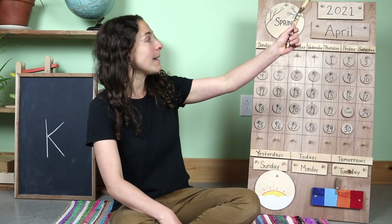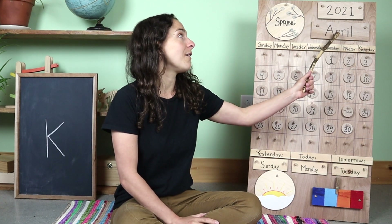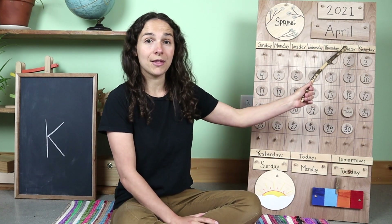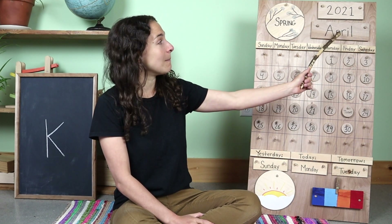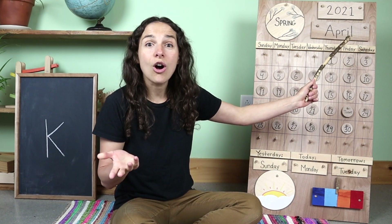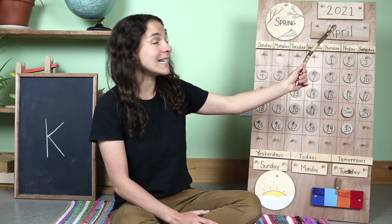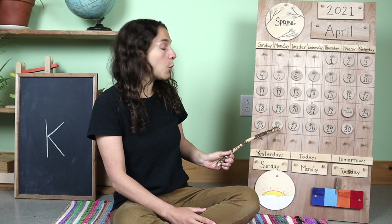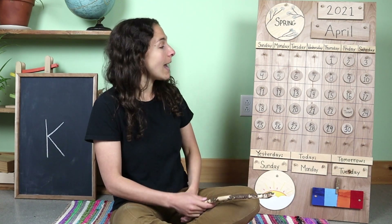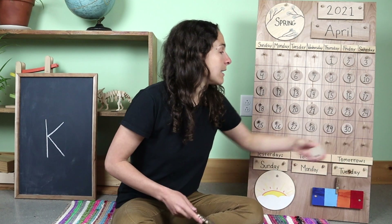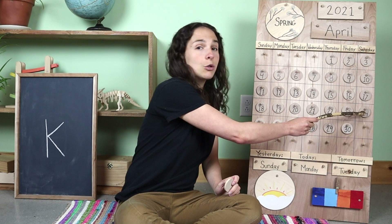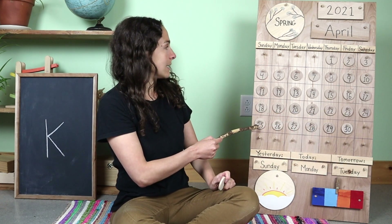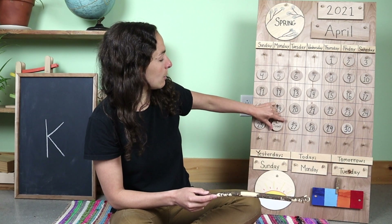I have my pointing stick and I'm going to bring it up to the top of the chart. Right up here we have the month. Do you know what the month is? April. That's right, the month is April. And the month of April is almost over, because today is April 26th. So I'm going to move the chip over from the number 23 — that was the last time we met — we'll go to 24, 25, and right on the number 26.